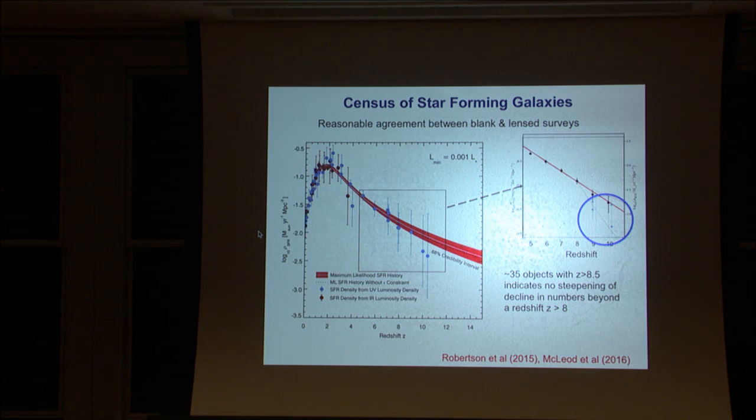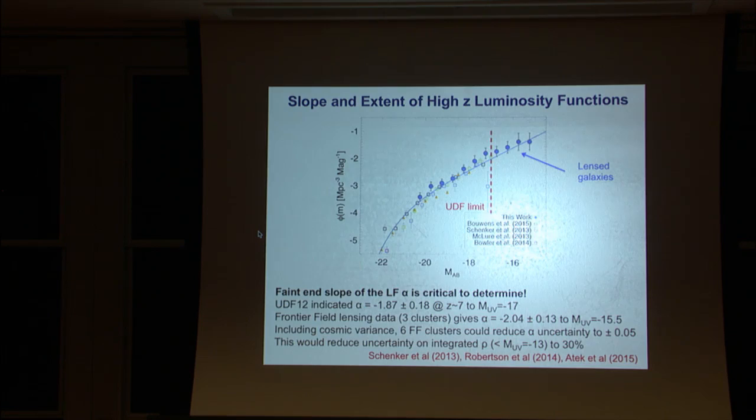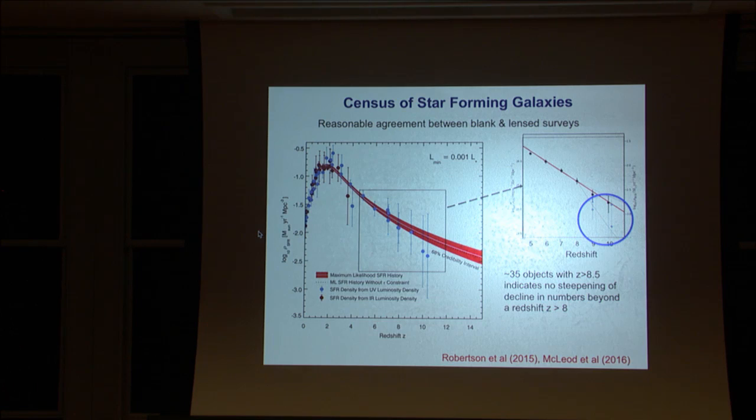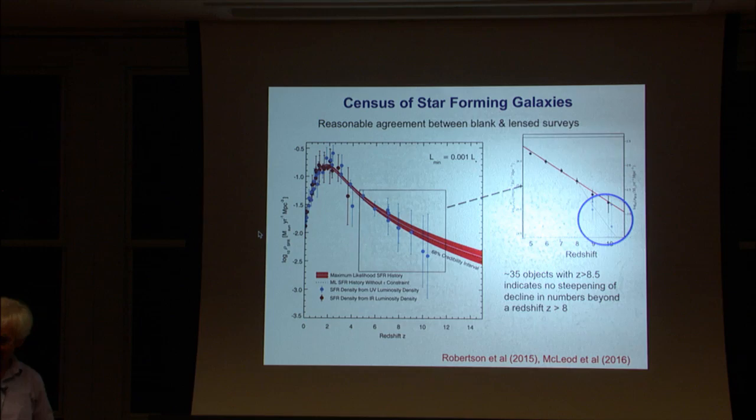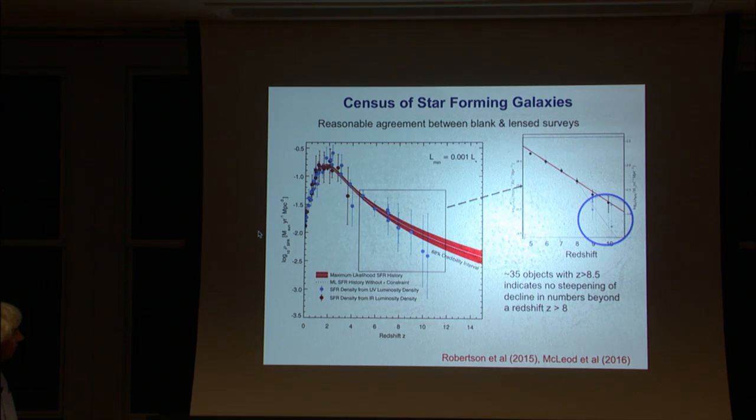The black is the new data that takes into account the frontier fields and the blank fields. The blue points were earlier data from the group at Santa Cruz that suggested, based on smaller samples, that it was falling more steeply. I think that's no longer the case. This one is the ultra-deep field only. This is all of the CANDELS data, the ultra-deep field and all the frontier fields. This is a huge amount of data. It's like 350 square arc-minutes. This is corrected. This part is taken from the review of Madau and Dickinson.